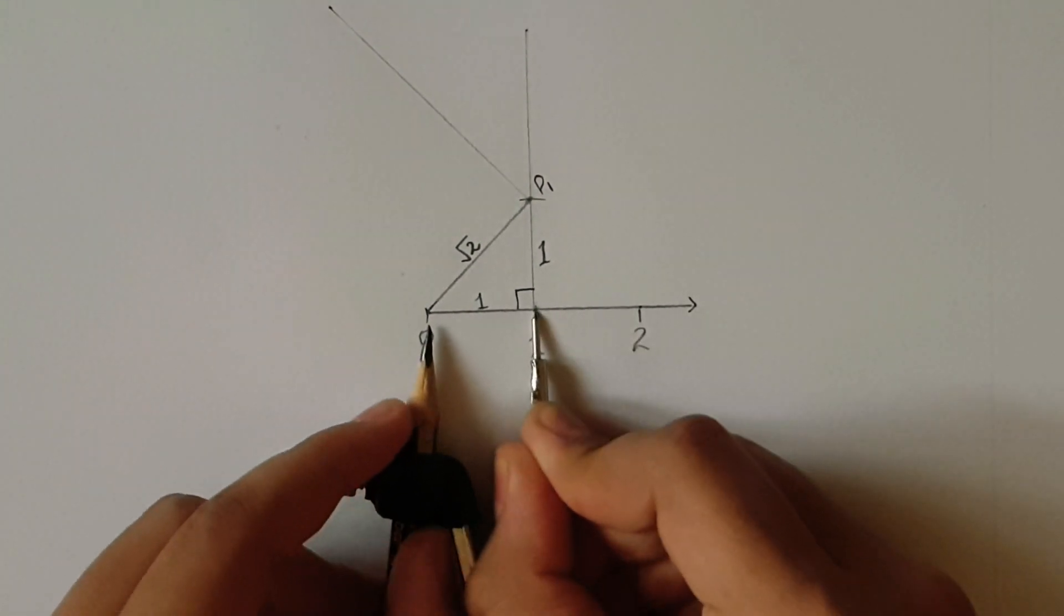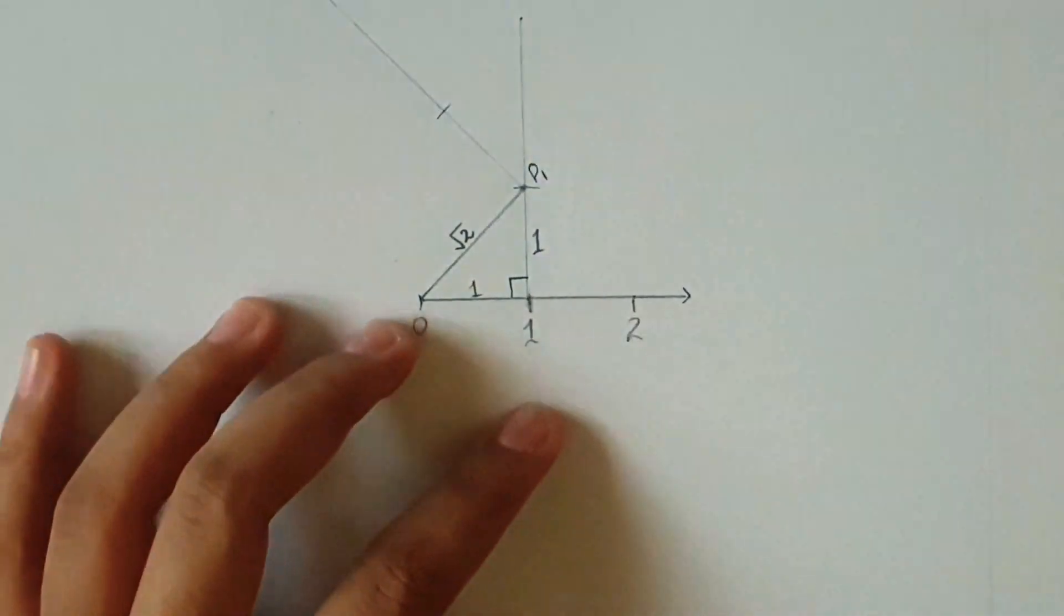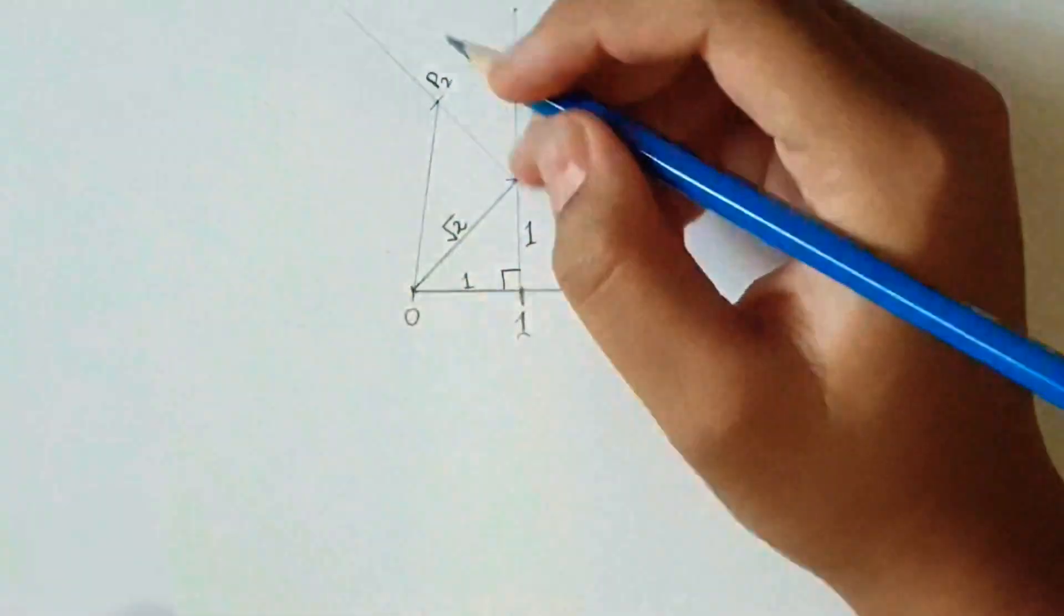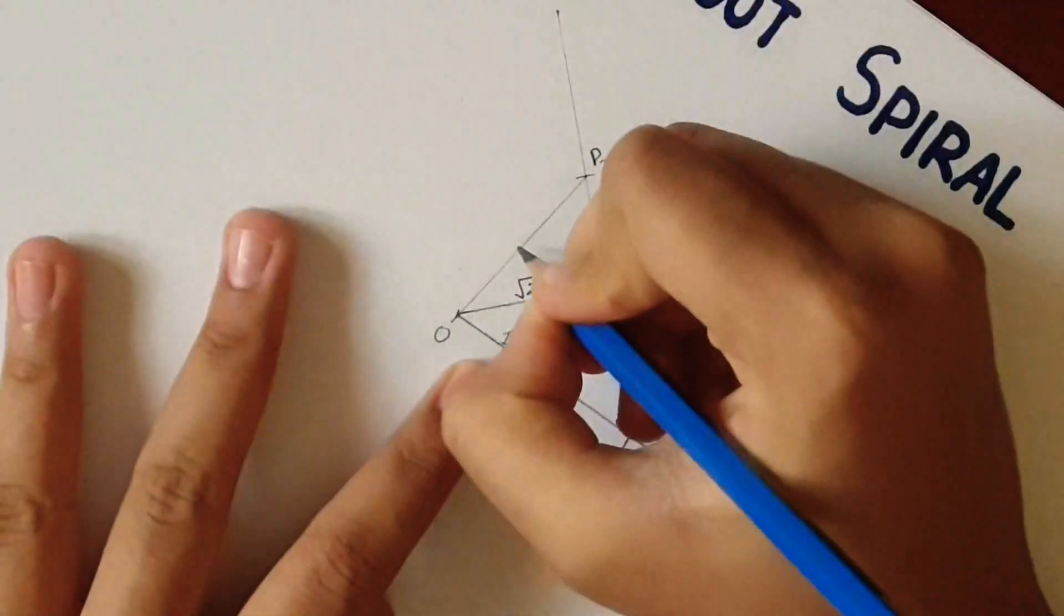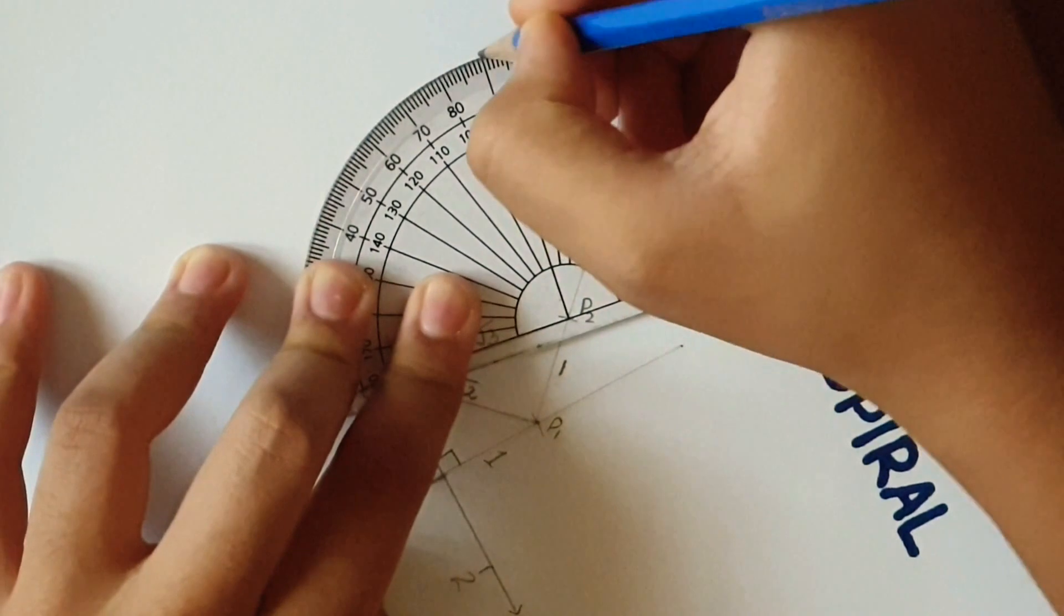Now take a compass, measure one unit and keep the needle at P1 and cut an arc and mark it as P2, then join 0 and P2. Mark that line as root 3 and repeat the same procedure, that is marking 90 degree and drawing a line, joining them.